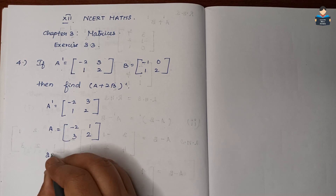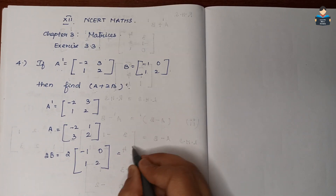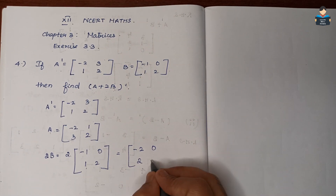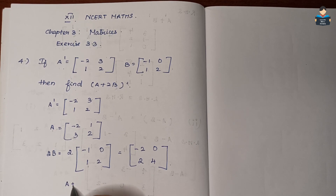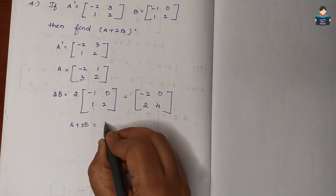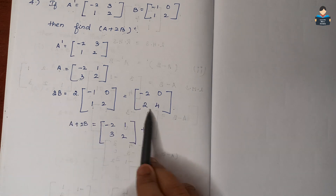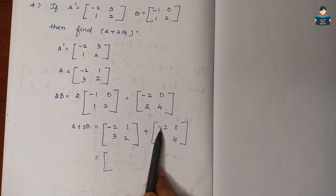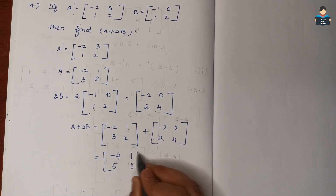2B = 2 × [[-1, 0], [1, 2]], so 2B = [[-2, 0], [2, 4]]. Now A + 2B = [[-2, 1], [3, 2]] + [[-2, 0], [2, 4]]. Solving: -2 + (-2) = -4, 1 + 0 = 1, 3 + 2 = 5, 2 + 4 = 6.